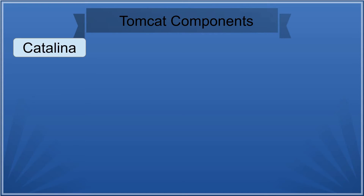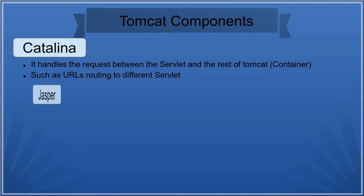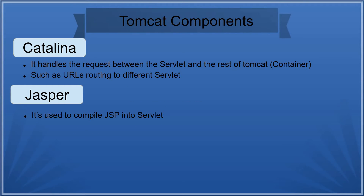After understanding WebSocket, it's time to understand the Tomcat components themselves. We have three main components. Starting with Catalina: Catalina handles the request between the servlet and the rest of the Tomcat container. It decides where a URL is going, what kind of resources you need, and what application inside your server you need to communicate with - since a server can have multiple applications. It routes requests to different servlets or different applications inside your server.